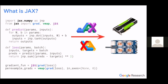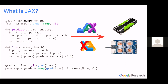Does JAX have a named tensor feature? We are working on the new xmap transform, which I didn't have time to demo. That's even more under development than pjit, but the big idea is introducing named axes and a named axes programming model. We have an xmap tutorial online if you want to learn more, but it is very likely to change moving forward.